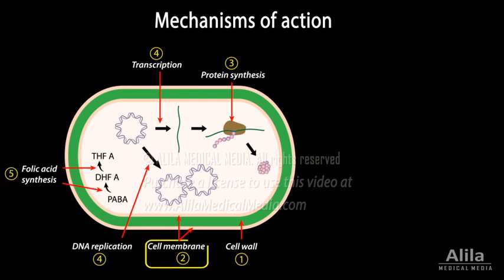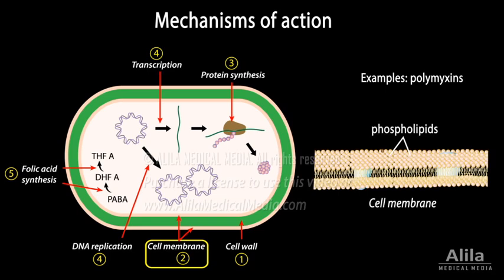Disruptors of cell membrane: some antibiotics disrupt the integrity of the cell membrane by binding to membrane phospholipids. Because cell membrane is also found in mammalian cells, these antibiotics are also toxic to host cells if administered systemically.